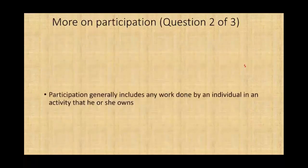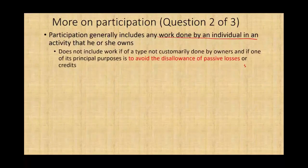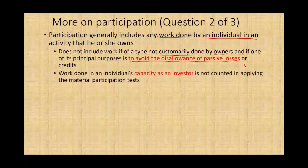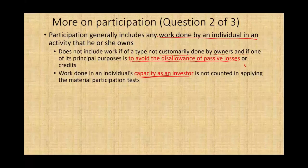More on participation — what counts as participation? Generally, participation is any work done by an individual. It does not include work where the type of work is not customarily done by owners, and where one of the principal purposes is to avoid the disallowance of passive losses — for example, cutting the grass or carrying out simple tasks just to add up hours. Work done in the individual's capacity as an investor — such as negotiating a line of credit or meeting with potential investors to raise money — does not count. Additionally, participation by an owner's spouse counts as participation, so your combined hours with your spouse can count toward the threshold.